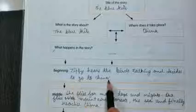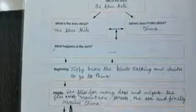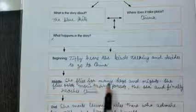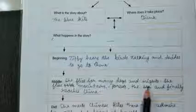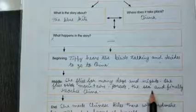Middle. In middle what happened? She flies for many days and nights, over mountains, forests, the sea and finally reaches China. This is what she did in the middle.